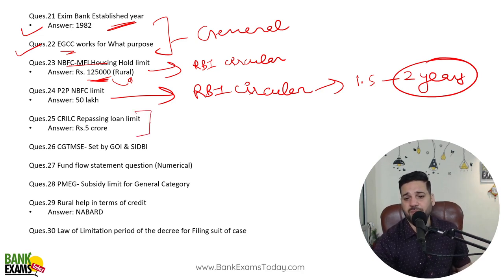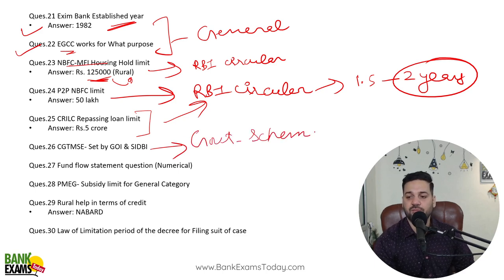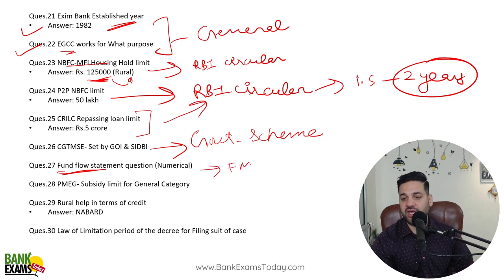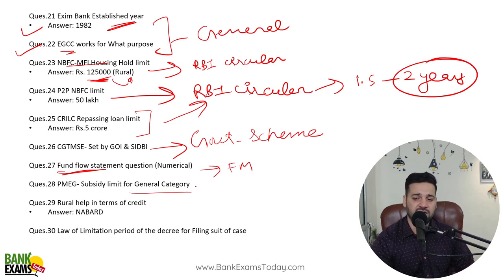Krillik's repassing loan limit — again this is an RBI circular. CGTMSE set by Government of India and SIDBI — this was a very popular government scheme at that time. A question from fund flow statement appeared here. Cash flow statement, fund flow statement — these are from pure Financial Management. Capital budgeting and working capital management are also part of FM. PMEG subsidy limit for general category — that government scheme was very important at that point.